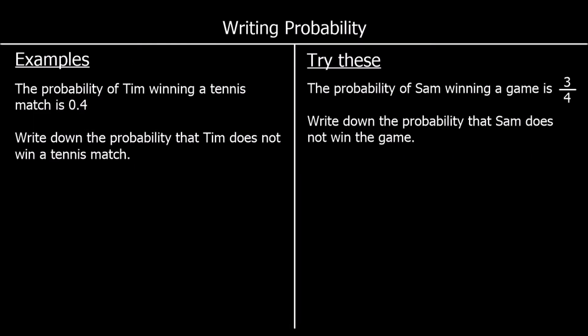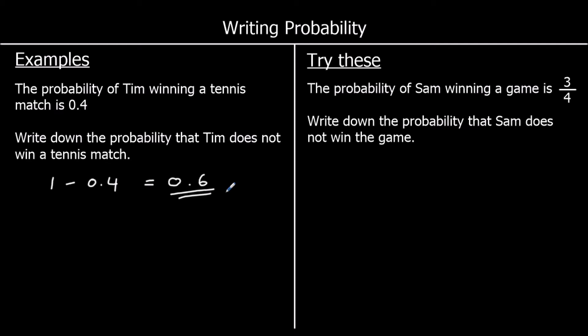We need to know that all possible outcomes add up to one whole. The probability of Tim winning a tennis match is 0.4. Write down the probability that he does not win. The probability of winning and the probability of not winning must add up to one whole. One minus 0.4 is 0.6, so the probability he does not win is 0.6.